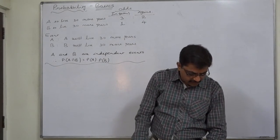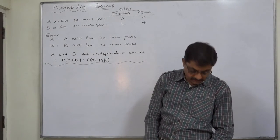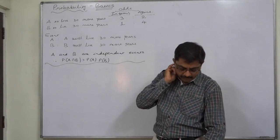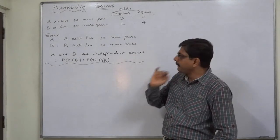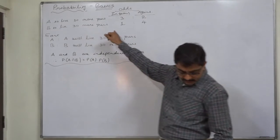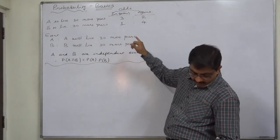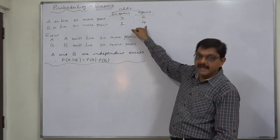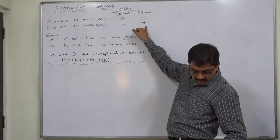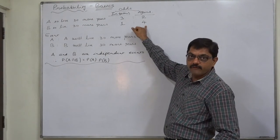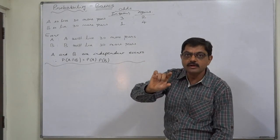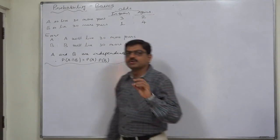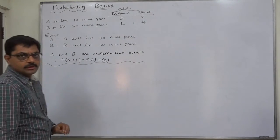The age of another person B is 40 years at present. The odds against his living up to the age of 70 are 4 to 1. So the odds against B living 30 more years: since the information is given as odds against, the first value out of the ratio stands for against and the second for in favor. This is a small rule you have to remember.